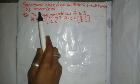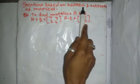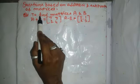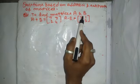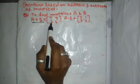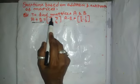Now, dear friends, we will see the question based on addition and subtraction of matrices. Here the question is given to find matrices A and B. And A plus B is given as by the element 7, 3, 2, 4.